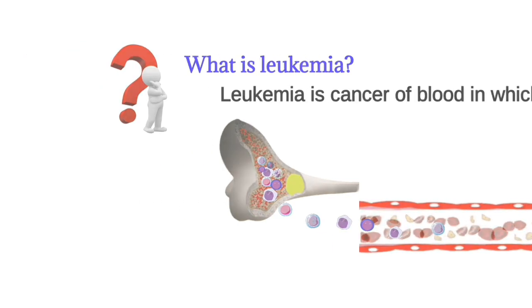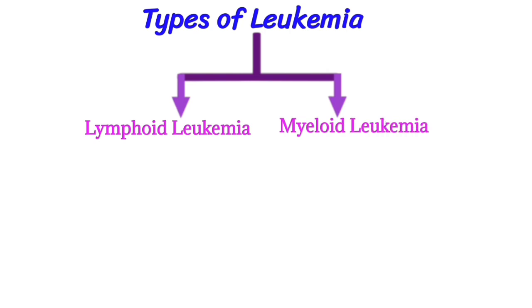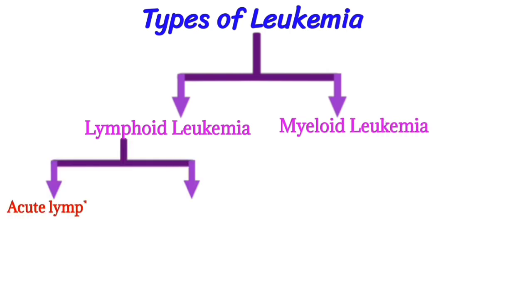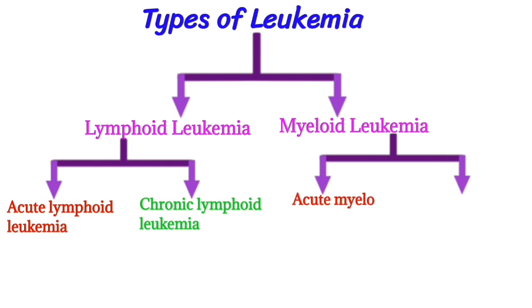There are two types of leukemia. The first is lymphoid leukemia and myeloid leukemia. Lymphoid leukemia is further divided into acute lymphoid leukemia and chronic lymphoid leukemia. Myeloid leukemia is further divided into acute myeloid leukemia and chronic myeloid leukemia.